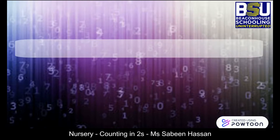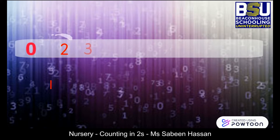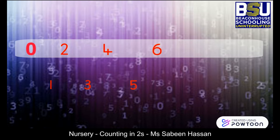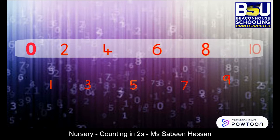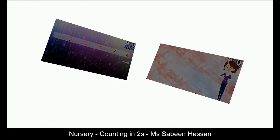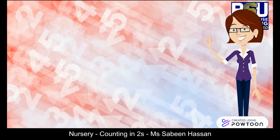Let's count in twos starting from number zero. We'll skip number one and land upon number two. Then we'll skip number three and go to number four. Following the same sequence, we'll skip numbers five, seven, and nine, and land on six, eight, and ten.